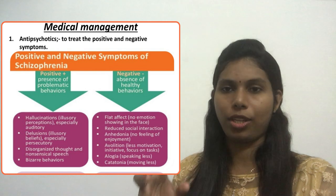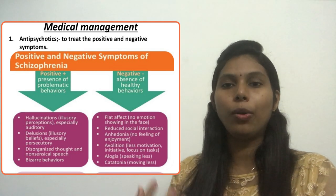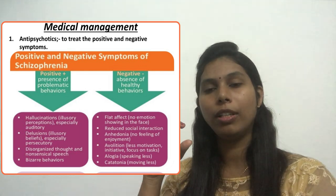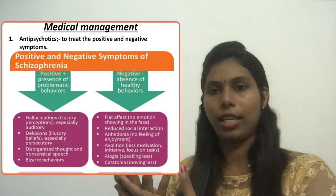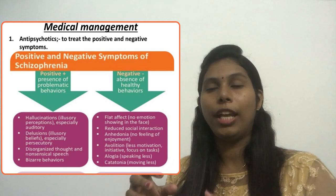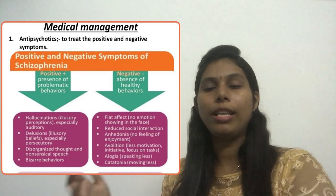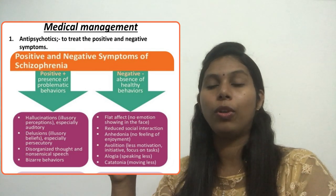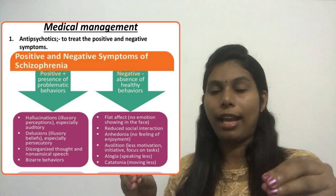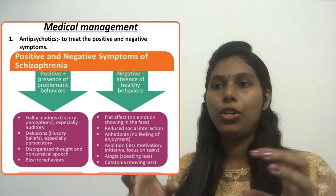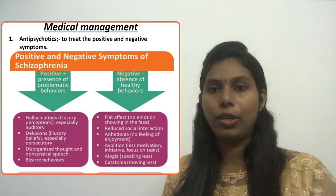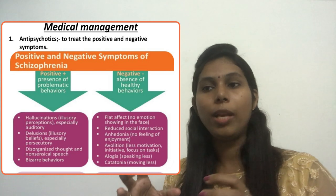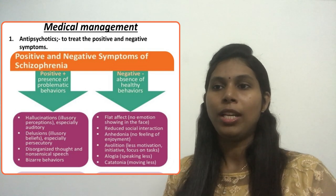Other negative symptoms include reduced social interaction — social withdrawal; anhedonia — they cannot express or feel enjoyment. Maybe they enjoyed sports activities previously but now they can't feel that same pleasure when they think about participating in that activity. Then avolition — less motivation, initiative, or focus on tasks; they cannot initiate any work or activities. And alogia — speaking very little.